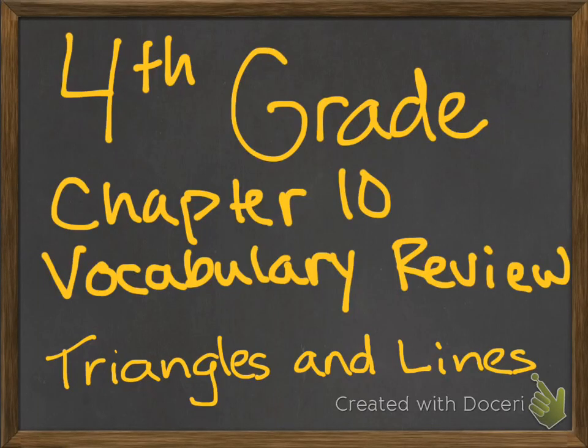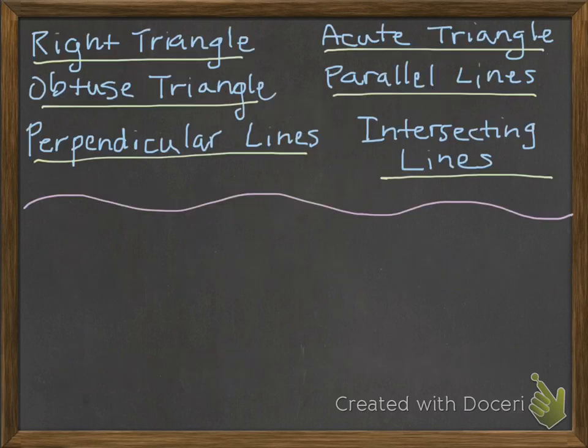All right, let's take notes for chapter 10 vocab review. This time we're going to be reviewing triangles and lines. Just the same as last time, I'm going to be saying the vocab definition, and then you're going to be picking a word from the word bank that describes it.